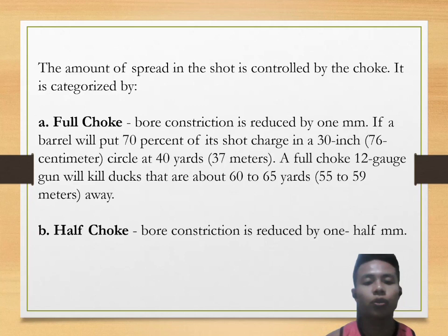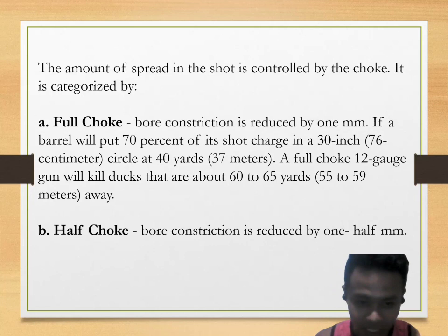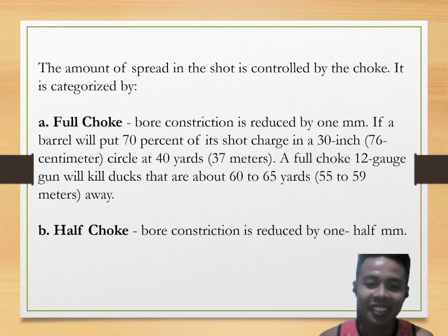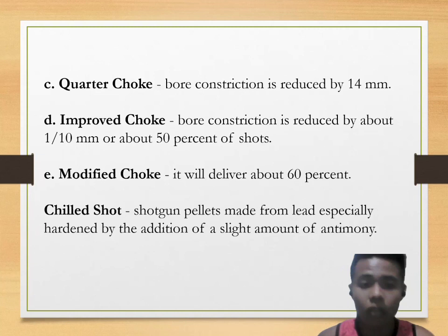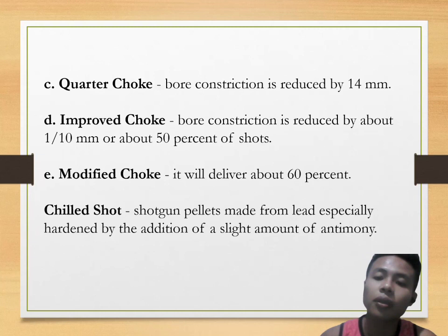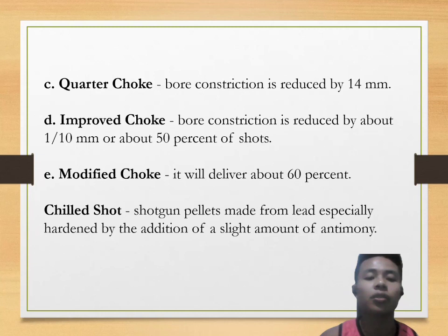Half choke: bore constriction is reduced by one-half millimeter. Quarter choke: bore constriction is reduced by 1/4 millimeter. Improved choke: bore constriction is reduced by about 1/10 millimeter, or about 50% of the shots. Modified choke will deliver about 60 percent of shot pattern.